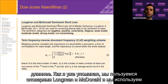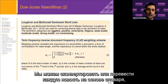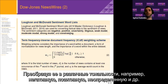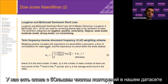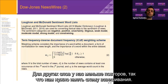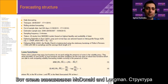We are using the Loughran-McDonald dictionary — the latest version from 2018 — and we can convert every news item based on this dictionary to different sentiments: negative, positive, uncertainty, and many others. We also apply a weighting scheme for normalization, because some words have more repetitions in our data set than others. This is the proposed weighting scheme from McDonald and Loughran.